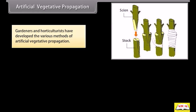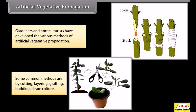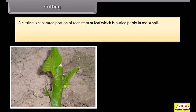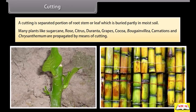Gardeners and horticulturists have developed various methods of artificial vegetative propagation. Some common methods are cutting, layering, grafting, budding, and tissue culture. A cutting is a separated portion of root, stem, or leaf which is buried partly in moist soil. Many plants like sugarcane, rose, citrus, duranta, grapes, cocoa, bougainvillea, carnations, and chrysanthemum are propagated by means of cutting.